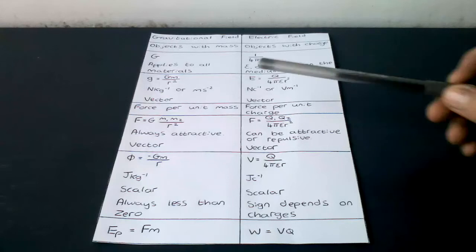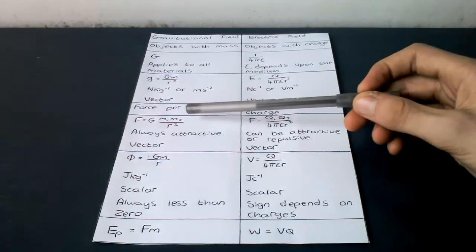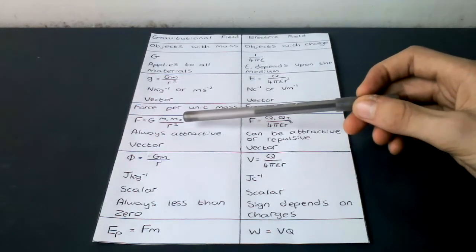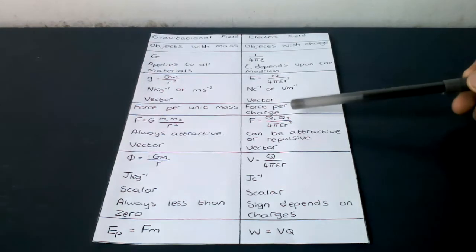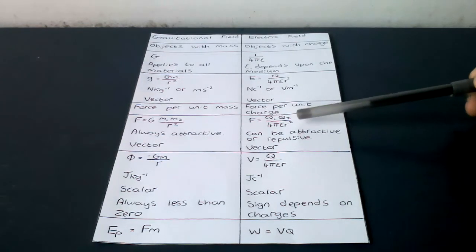Force in a radial field: force equals g times m1 times m2 over r squared, force equals q1 times q2 over 4 pi epsilon r squared.